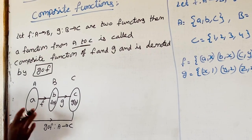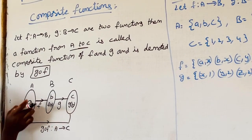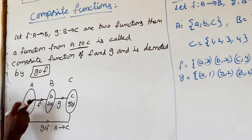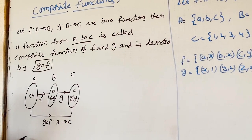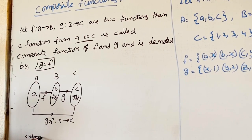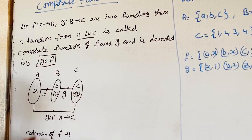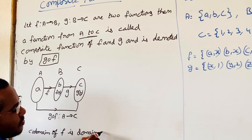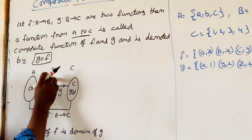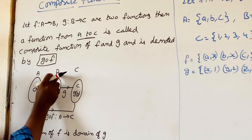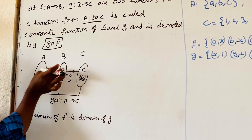Now observe here: when we take a function A to B, set A is called the domain of the function and set B is called the co-domain of the function. So co-domain of F is B. This B set is the domain of G. Function B to C is called the G function. So for G, domain is B and co-domain is C. For function F, domain is A and co-domain is B.